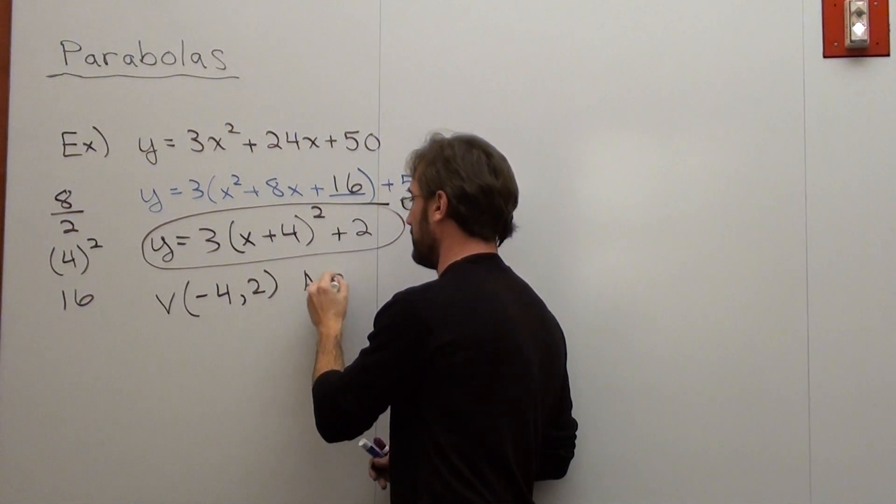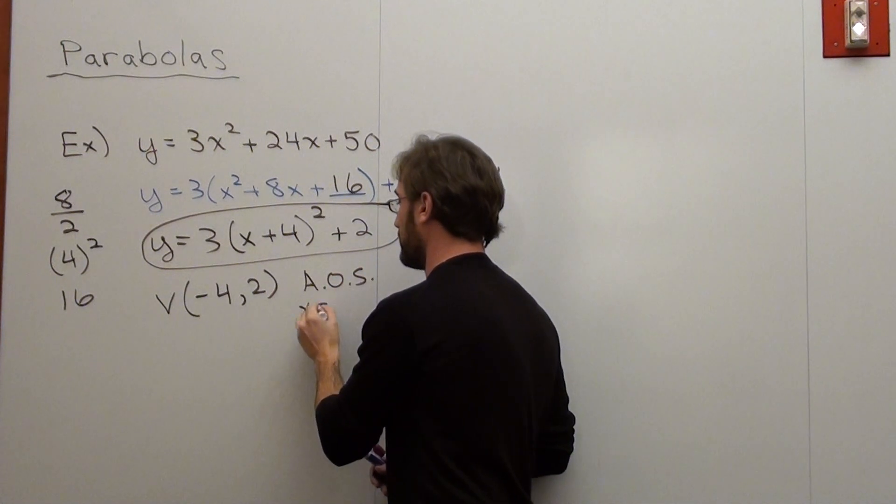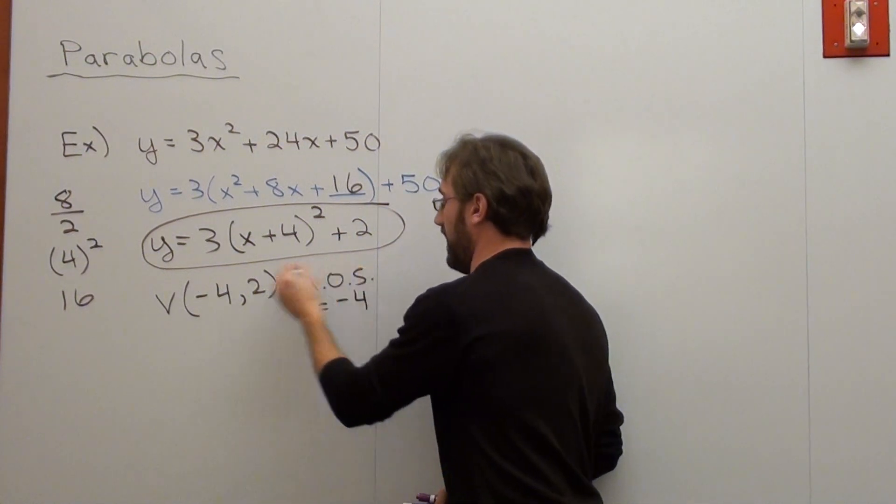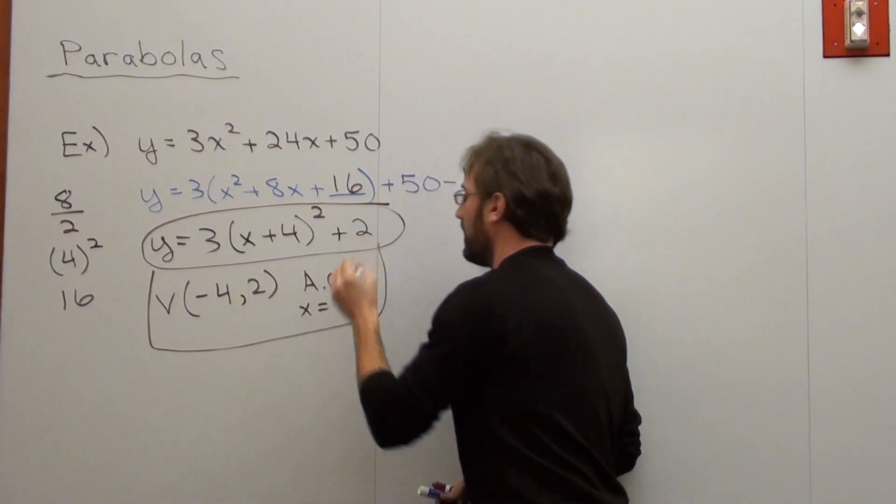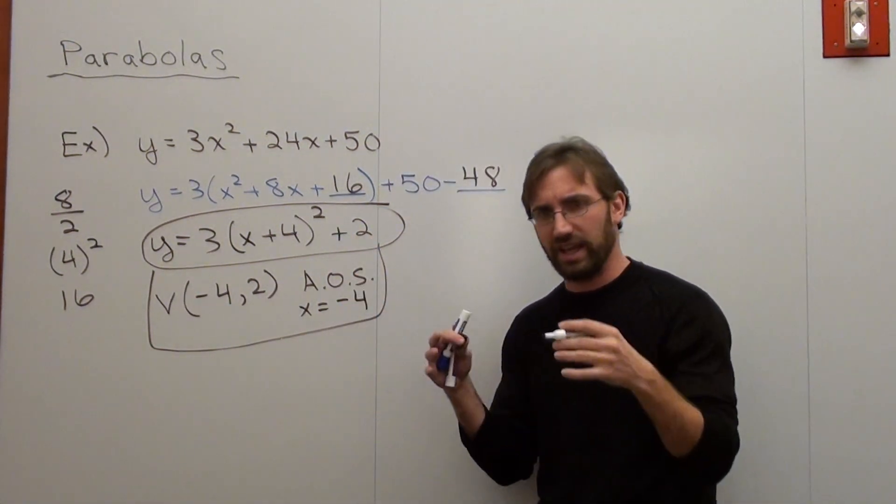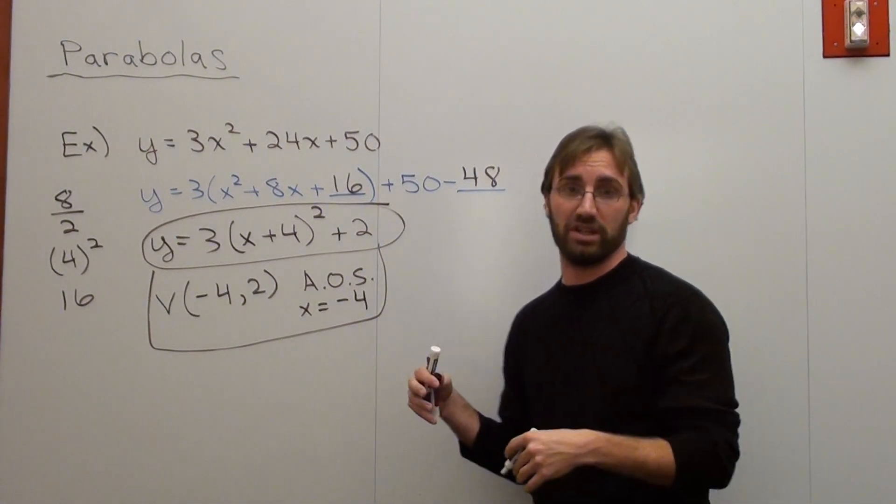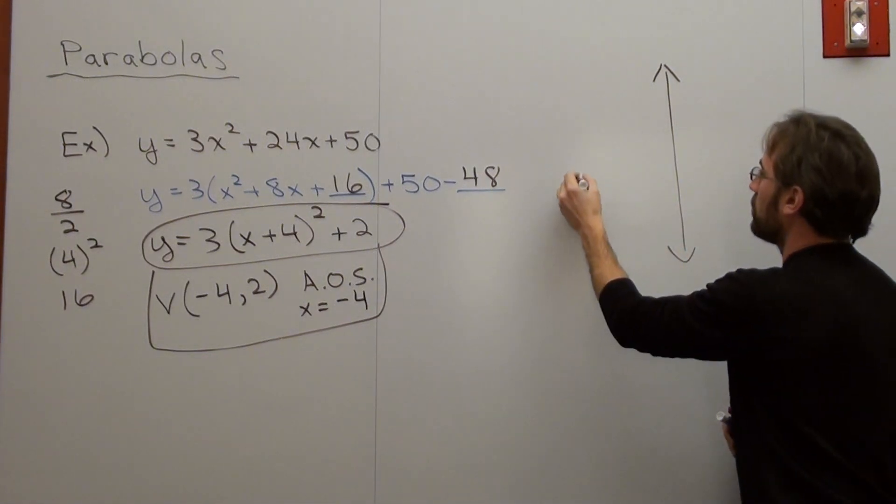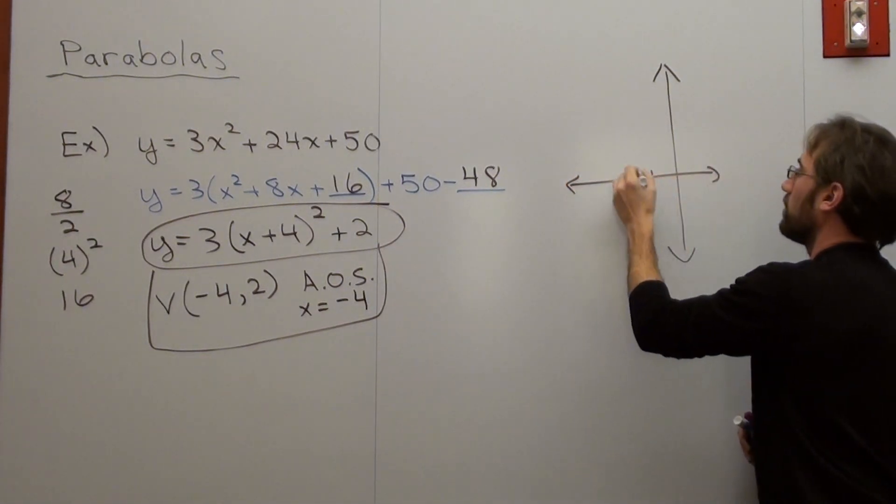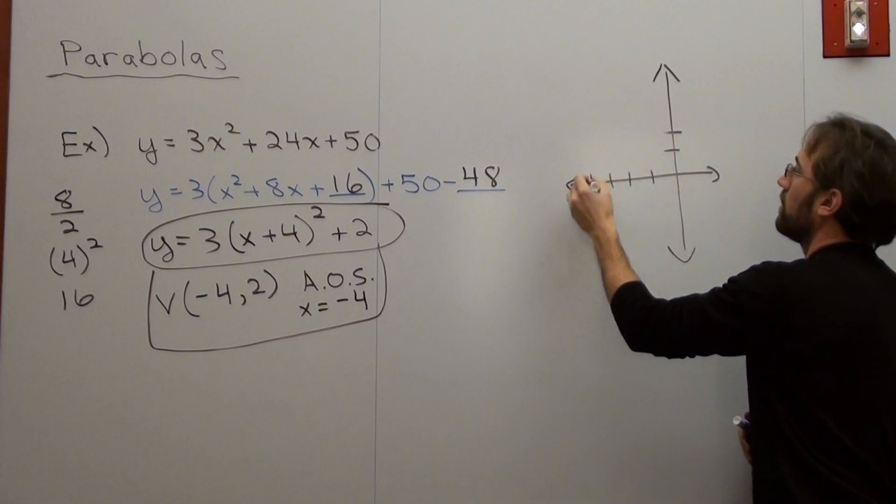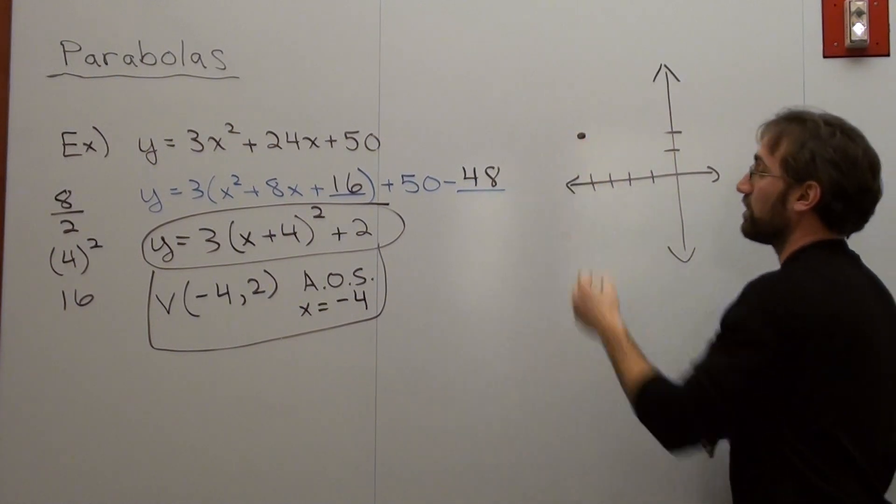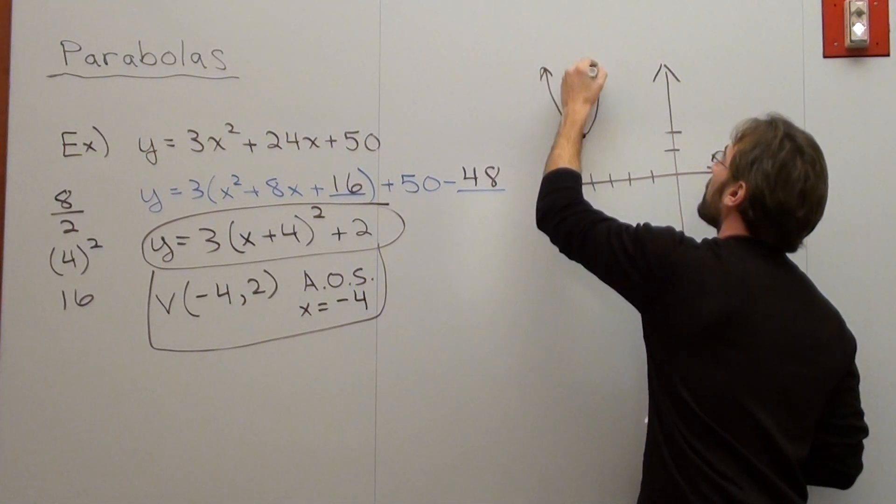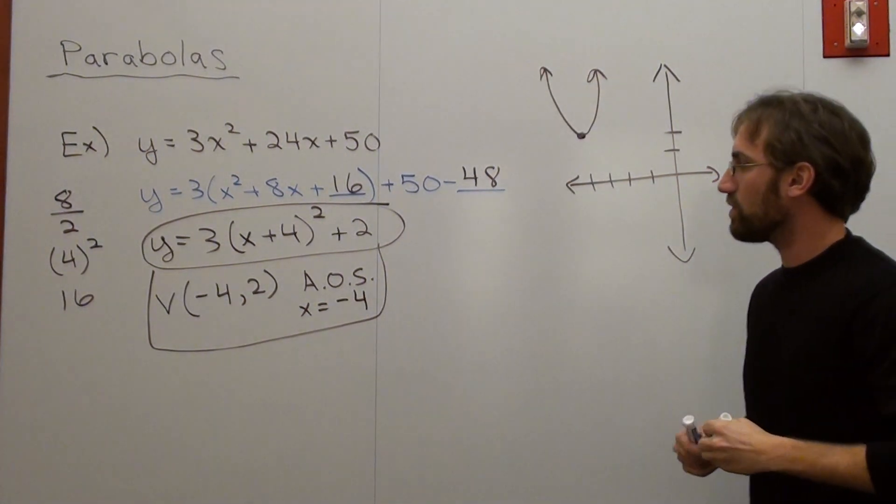So we'll start with that. And my axis of symmetry is x equals whatever this value is, the first value in the vertex, which is negative 4. So I've got that stuff now too. Now let me just draw a really quick graph so you can kind of get an interpretation and understanding of what's going on here. So my vertex is there, and it opens up, and it's a sharp opening.